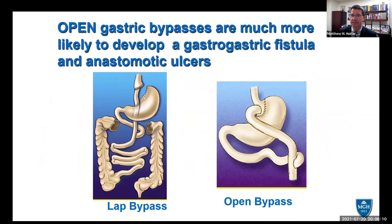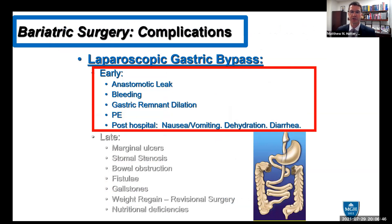Nowadays we don't see as many open gastric bypasses, but there are many out there. Open gastric bypasses are much more likely to develop a gastro-gastric fistula. In the laparoscopic gastric bypass the pouch is divided from the excluded stomach, whereas traditionally many open bypasses used the TA-90B stapler—stapled but non-divided—leading to a much higher rate of gastro-gastric fistulas. Gastro-gastric fistulas are also associated with anastomotic ulcers, which is part of today's talk.